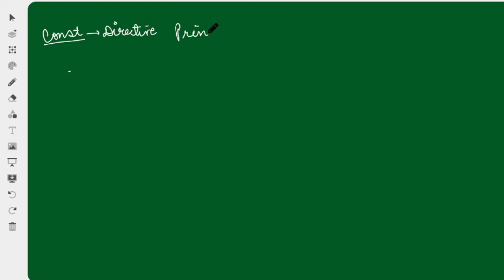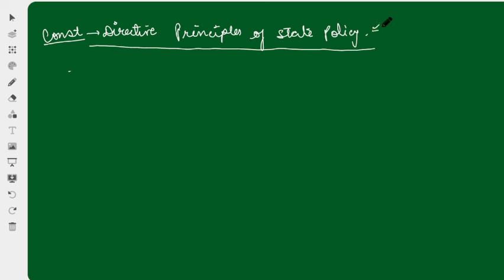So first let's see the full form: Directive Principles of State Policy. Why do we need to include DPSP as a separate chapter in the constitution? Because India is a welfare state. What does welfare state mean?